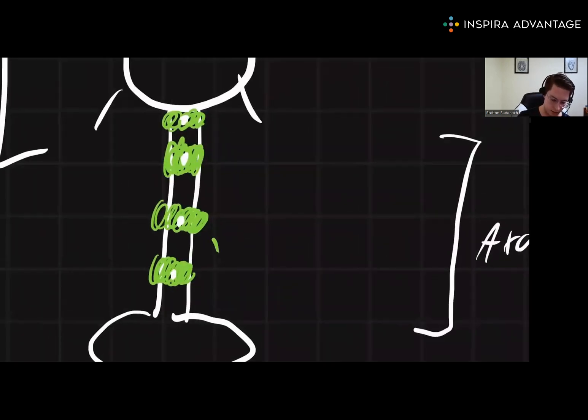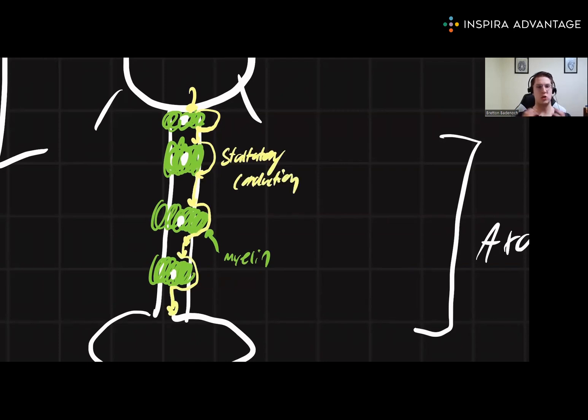And the green myelin here helps speed up the conduction of an action potential. This is because as we're going down, the action potential can skip over the myelin parts and just continue down through the axon itself. This mode of conduction is called saltatory conduction. This means jumping. The action potential is jumping down. It's skipping the myelinated portions.